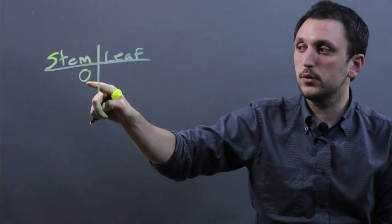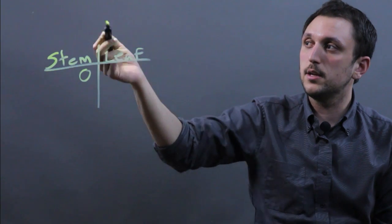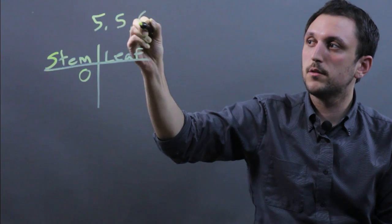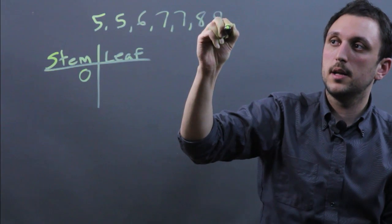Now, because we're using single digit numbers, it's going to have a zero. So let's say our set includes the numbers 5, 5, 6, 7, 7, 8, 9, and 9.